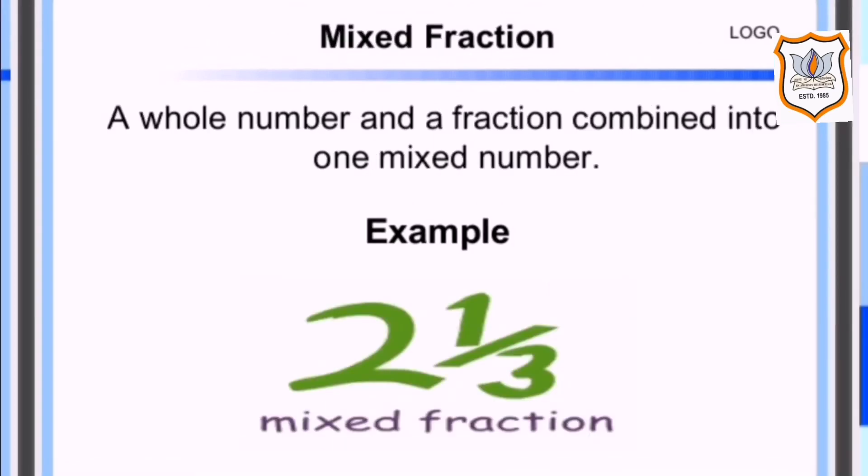Mixed fraction. A mixed fraction is a combination of the integer part and a proper fraction. These are also called a mixed number or mixed numeral. In simple words, a whole number and a fraction combine into one mixed number. For example, two and one by three, where two is an integer and one by three is a proper fraction.